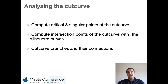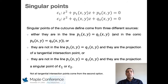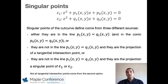Our attention will be focused on the analysis of the cut curve through the computation of its critical and singular points, the intersection points with the silhouette curves, and their branches and respective connections. We proved that singular points of the cut curve come from three different sources: either they are on the line p1 equal to q1 and also on the conic p0 equal to q0, or if they are not on this line, they come from tangential intersection points, or they could still be the projection of singular points of one of the quadrics.